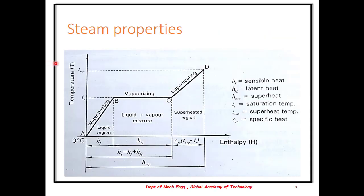If you recall the earlier lectures, you would notice this temperature-enthalpy profile which lists the enthalpy notations for various regions. In the liquid region, the enthalpy is denoted by HF, that is the sensible heat gain. In the liquid plus vapor region, HFG is the latent heat. In the superheated region, enthalpy is denoted by the formula CPS into T superheated minus TS, that is specific heat into the temperature difference. This forms the crux for solving numericals on steam properties.